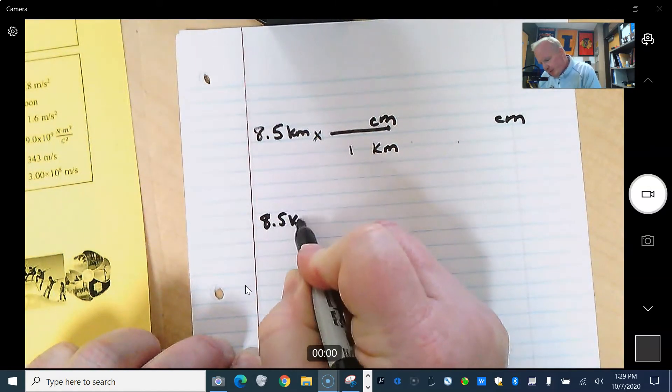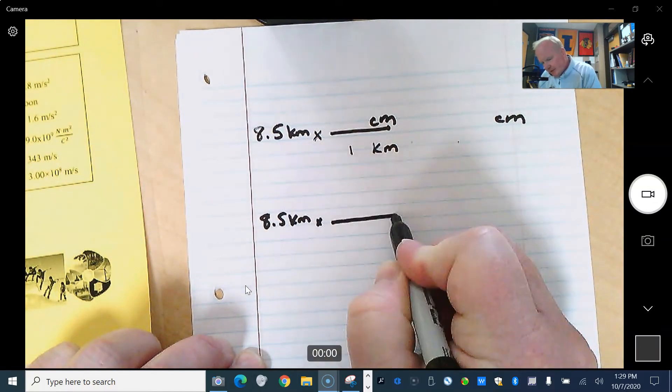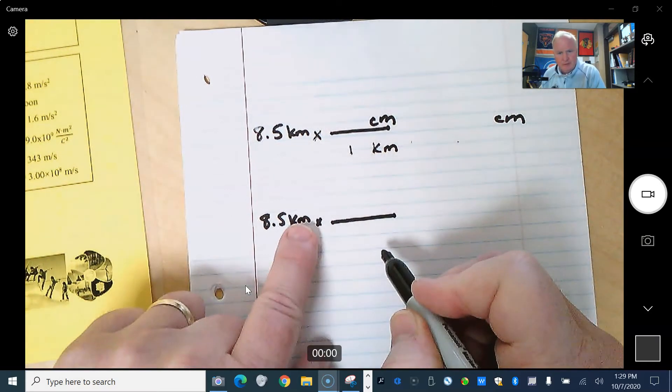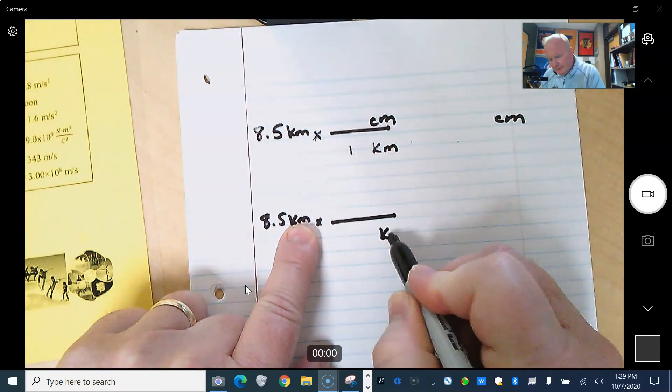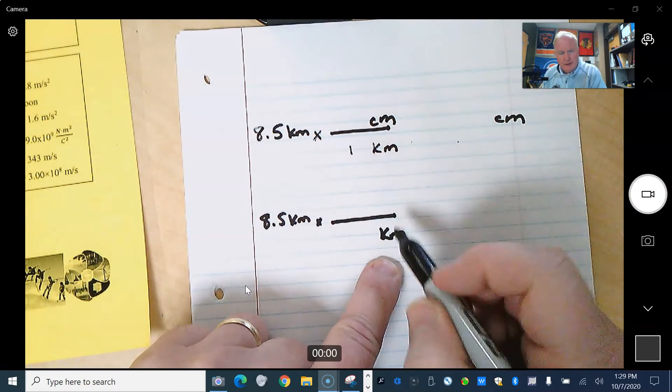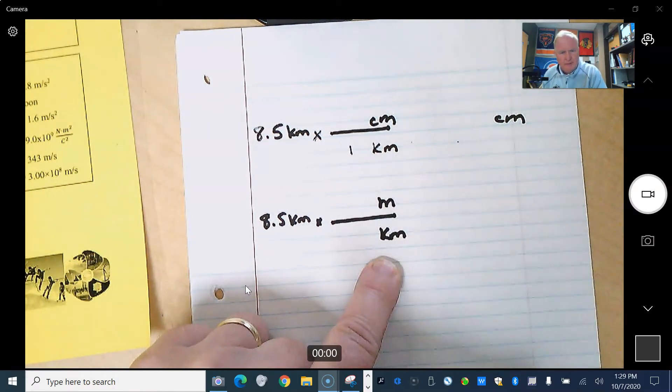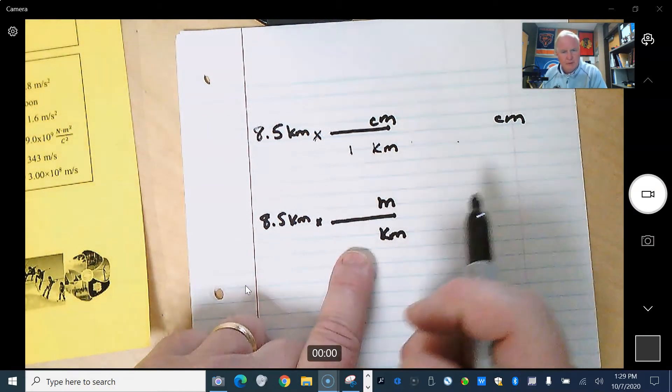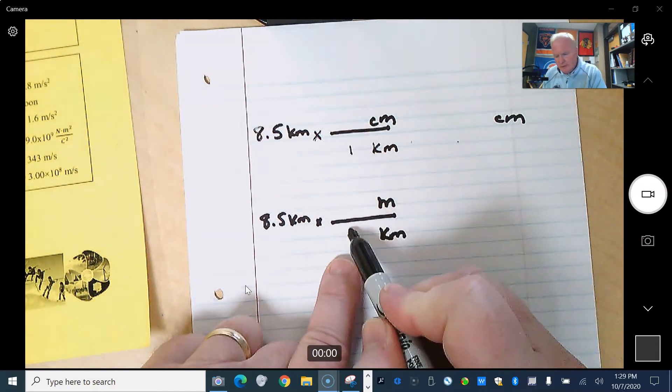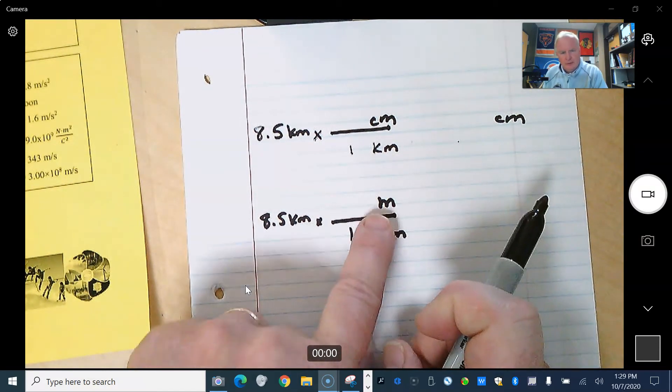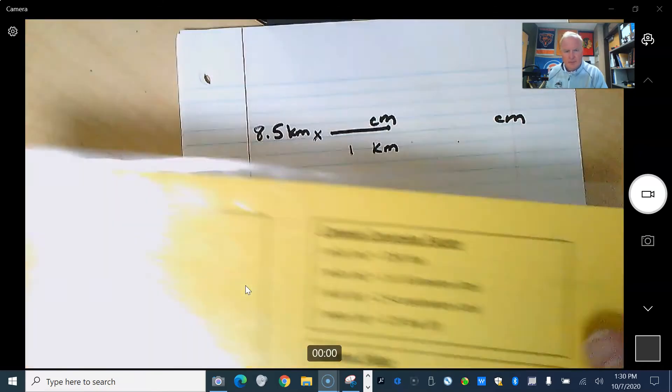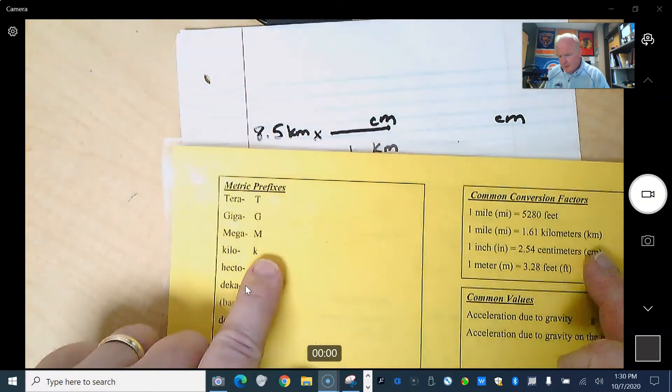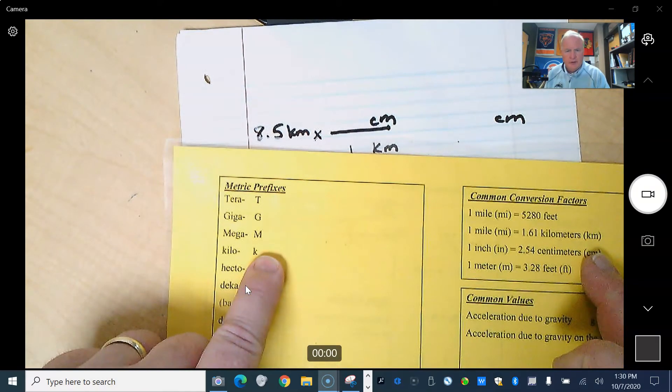So let's take a look at when we do it right, what happens. So 8.5 kilometers, we build our conversion factor. We're going to put kilo opposite, because we want to get rid of it. And we're going to stop at the base, at meters. We're going to ask ourselves, which one's bigger? It's kilo. And now we're saying, okay, what's the number for kilo? Kilo is 1,000.